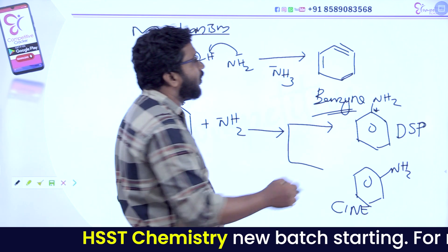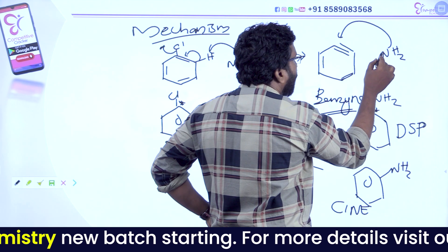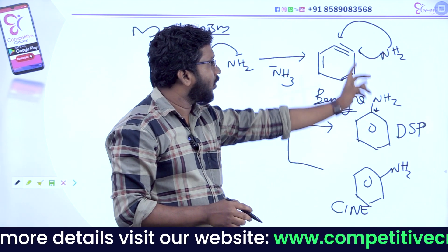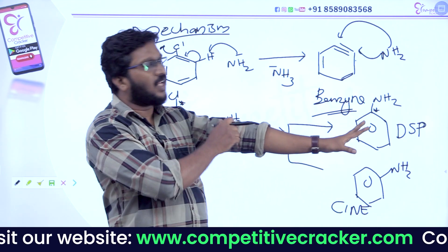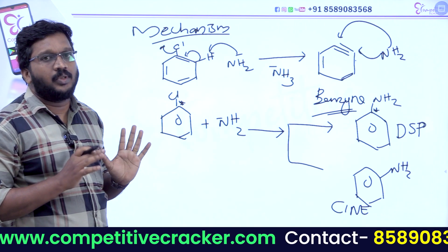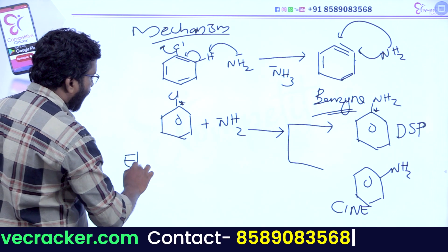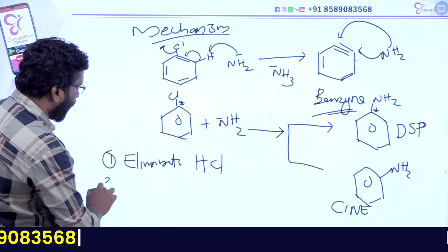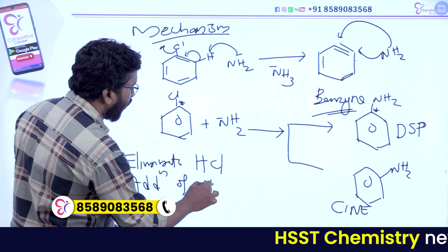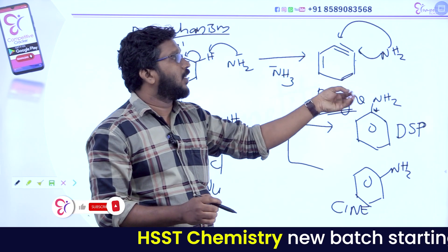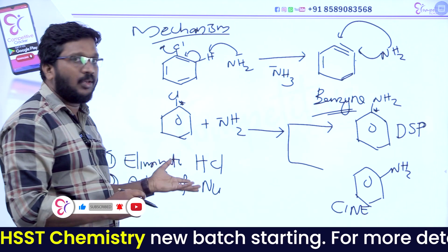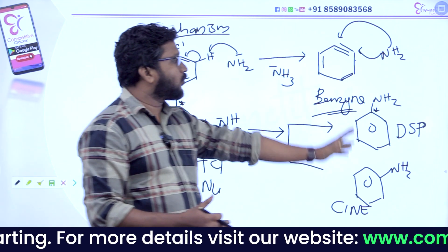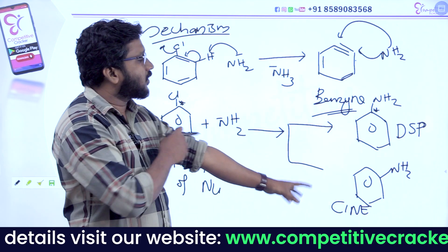Benzyne is the intermediate. If we call NH2 minus, the addition of the nucleophile NH2 occurs. The first step is Elimination of H and Cl (elimination of HCl). The second step is addition of the nucleophile NH2. Benzyne Mechanism is also known as Elimination-Addition Reaction, and it gives two types of products: Direct Substituted Product and Rearranged Substituted Product.